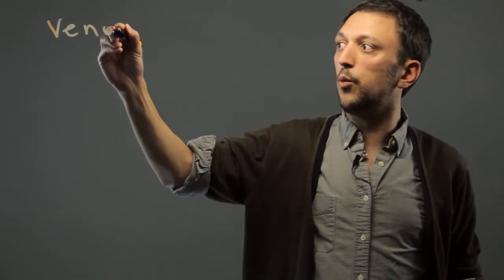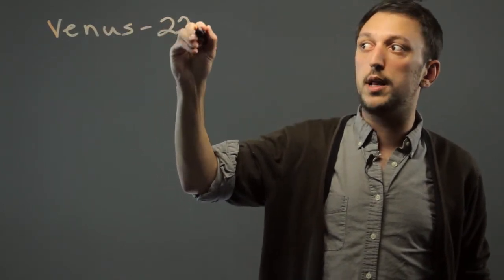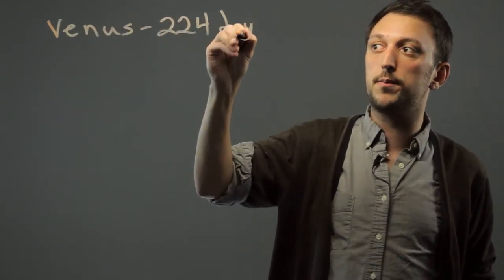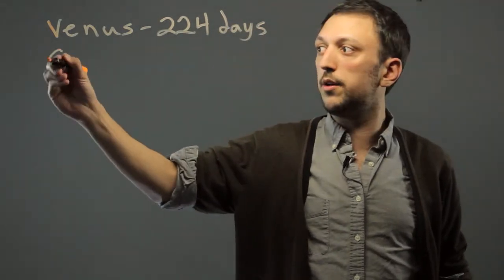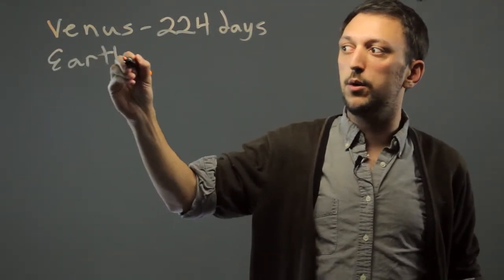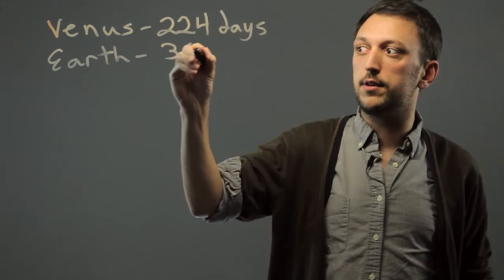Venus: one year on Venus is 224 days. One year on Earth, as we know, is about 365 days.